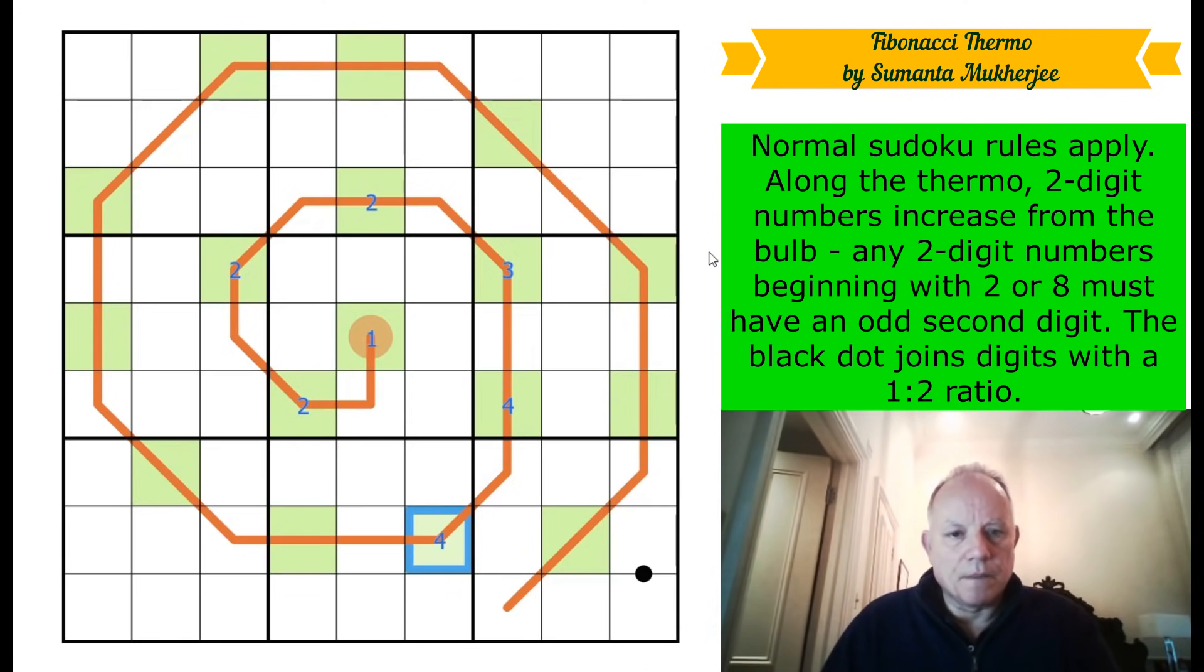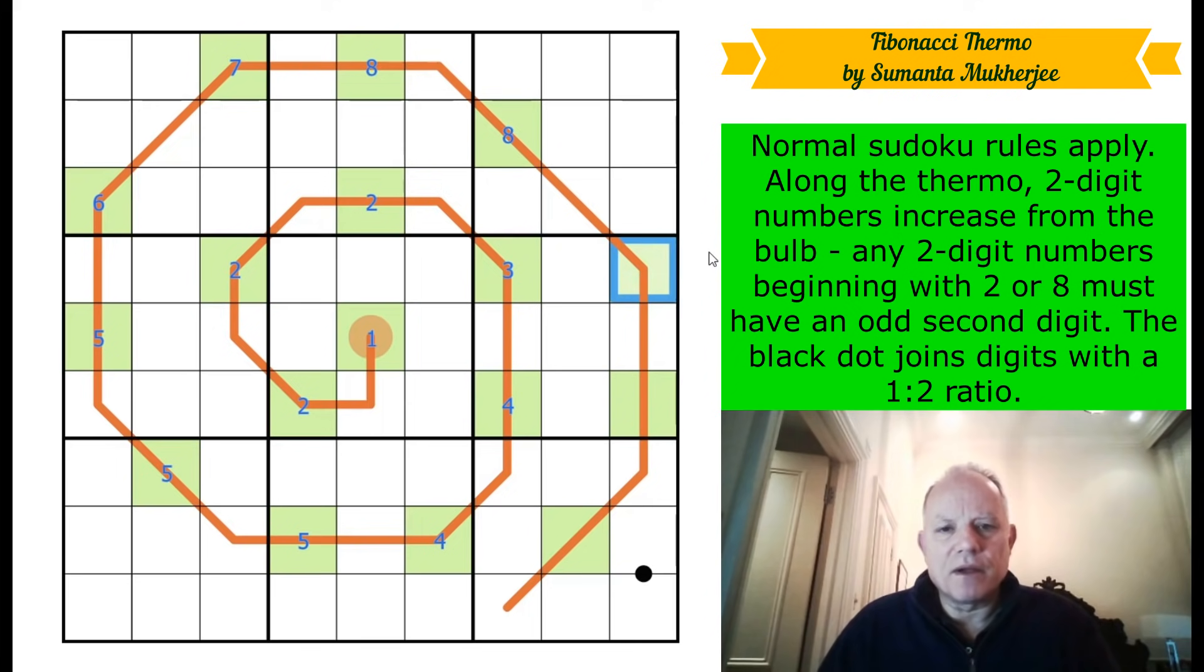Then four, because it sees the three. Then four. Sorry. Then five, because it sees the four. Five again. Five again. Six, because it sees the five. This is good. Six. No. Seven. It's in the same box as the six. Eight. Oh, is this chain going to be long enough? Is this thermo going to be long enough? Yes. We can do eight there. Nine and nine. And that must be right.